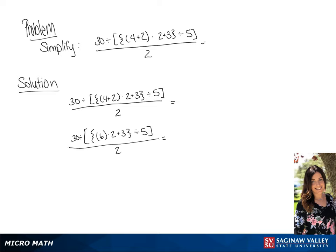And now we're going to address everything in the parentheses. So 6 times 2 plus 3, which is going to be 15. So in our bracket, we're going to have 15 divided by 5.